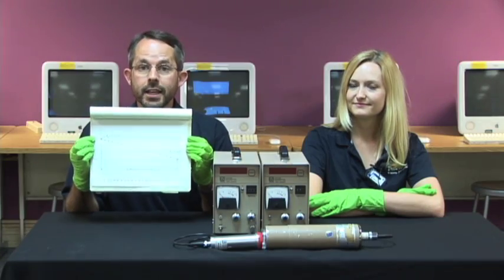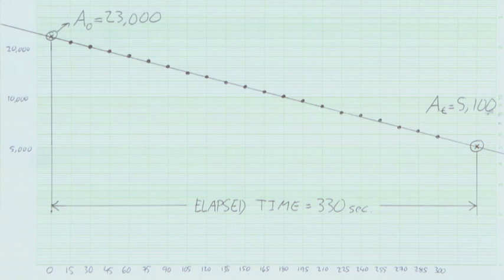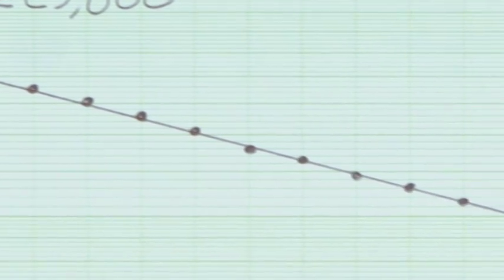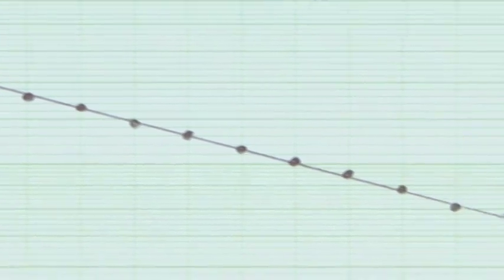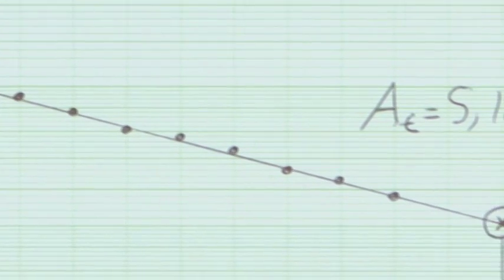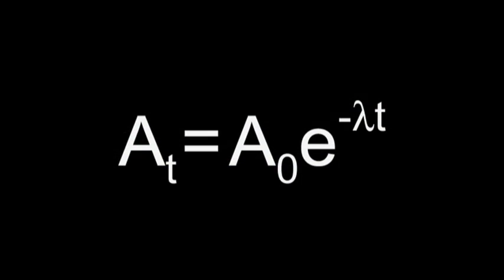We can use this graph to find the decay constant. All you need to know are two points on the line of best fit and the amount of time between them. The points you pick don't even need to be actual data points — any two points on the line that are convenient to use will work. Once you have those points, you need to solve this equation for lambda. We aren't going to work this out for you step by step — that's something you can do on your own.